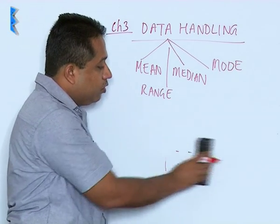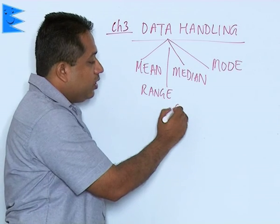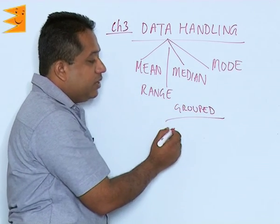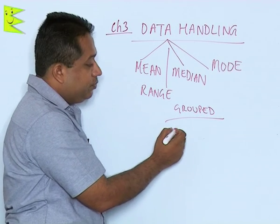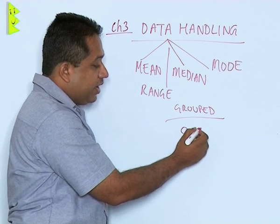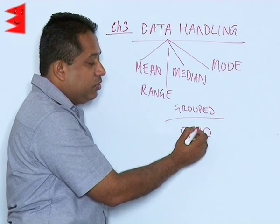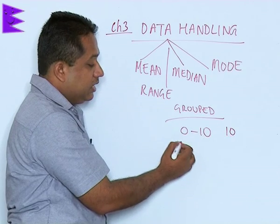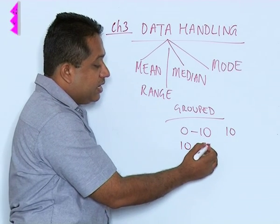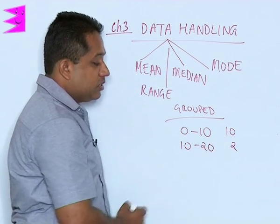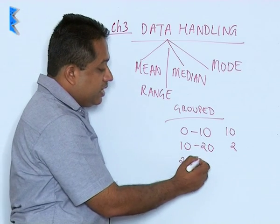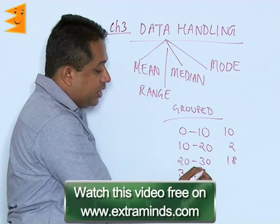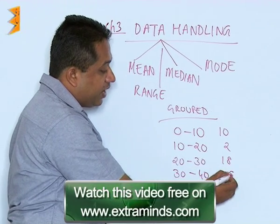This type of data will be called grouped data. When I am saying grouped data, I will arrange it in intervals — finding out how many students are getting between 0 and 10. Let us say 10 students are here between 0 and 10. How many between 10 and 20? Let us say there are only 2 students. Between 20 and 30, let us say there are 18 students. How many students between 30 and 40? Let us say 5 here.